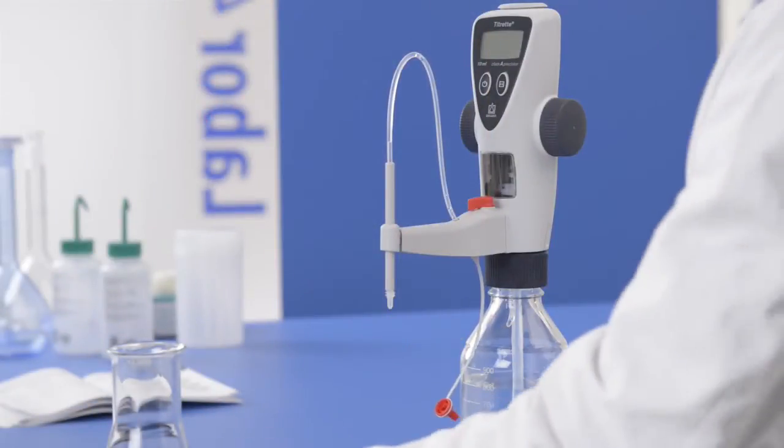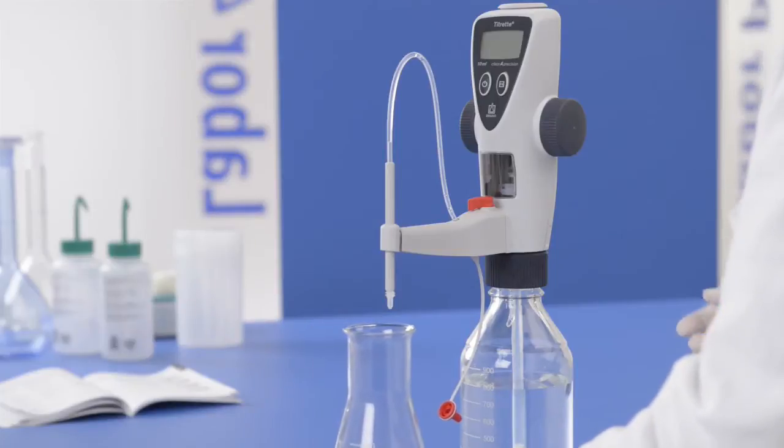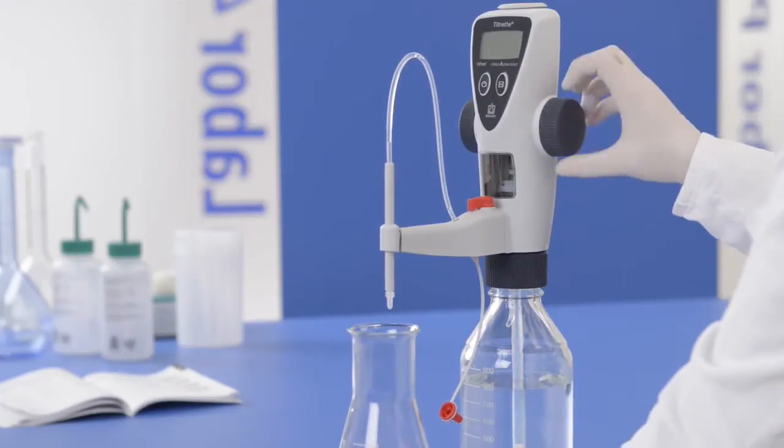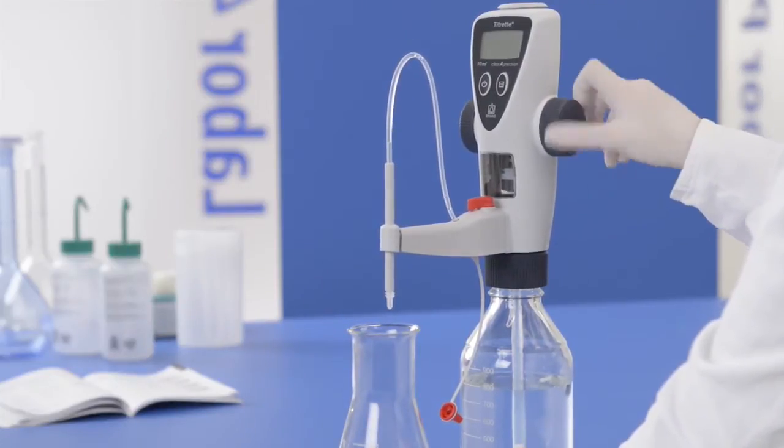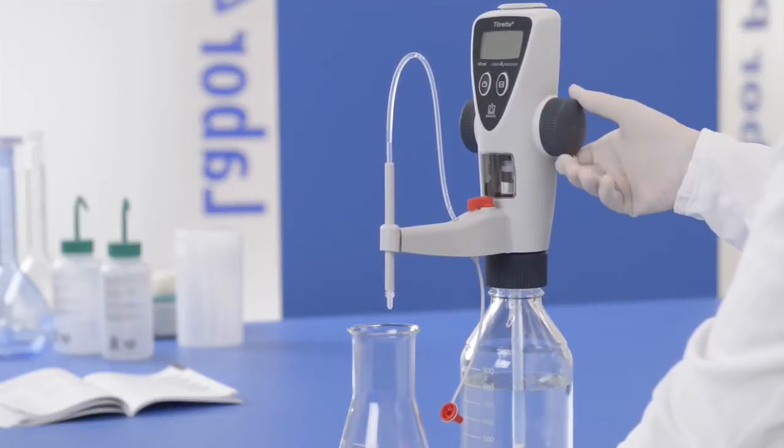To remove it, fill the dispensing cylinder once and empty it with the red valve set to 'Titrate.'